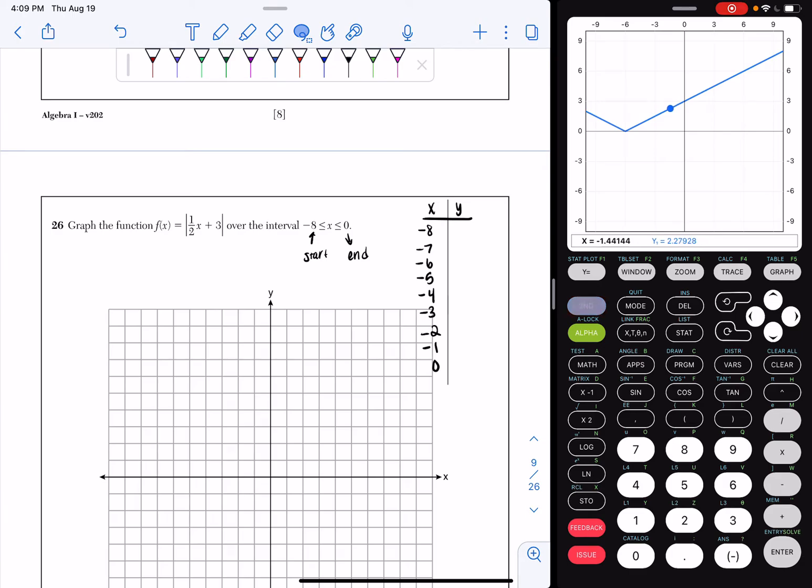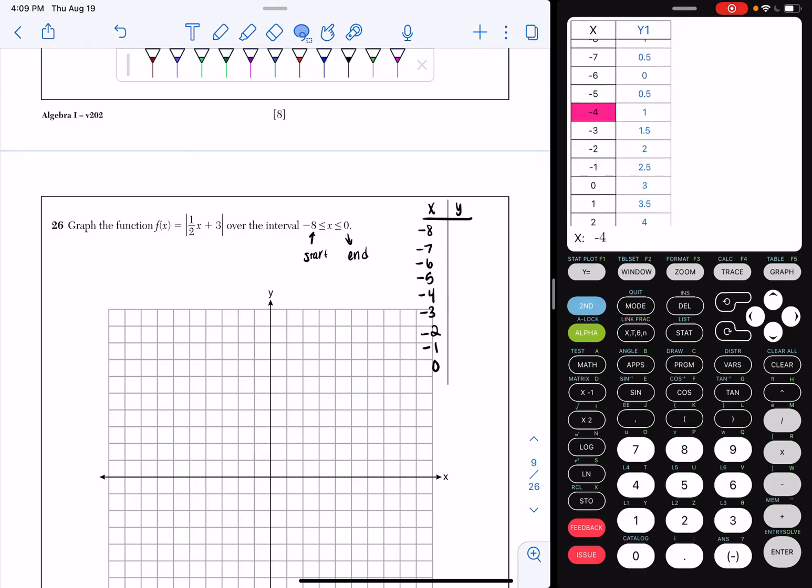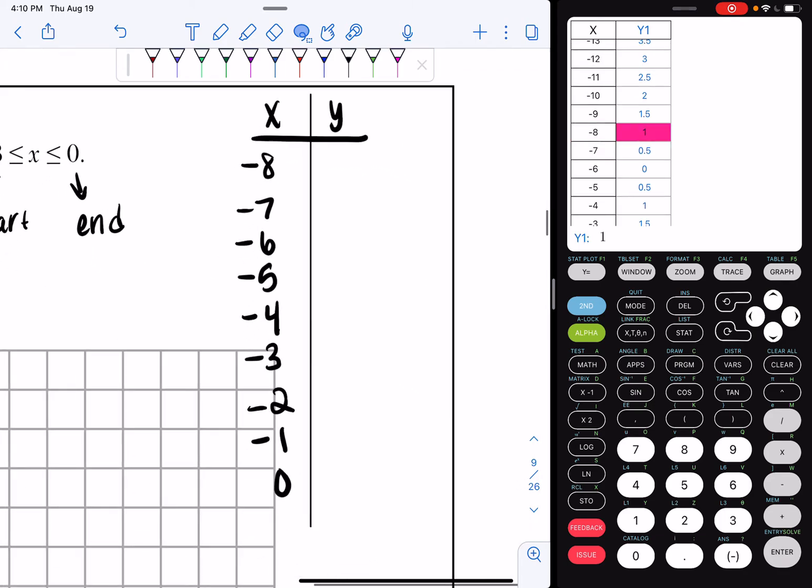So now I'm going to hit second, graph, and I'm going to scroll up to negative 8. When I plug in negative 8, I get 1. When I plug in negative 7, I get 0.5. When I plug in negative 6, I get 0.